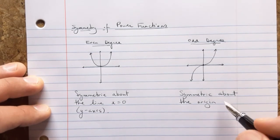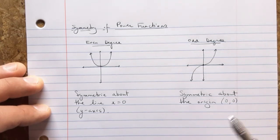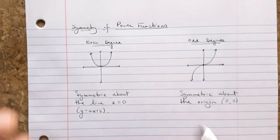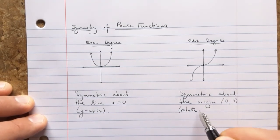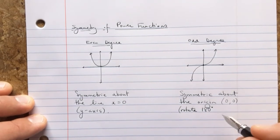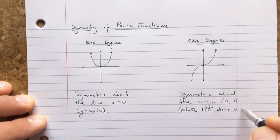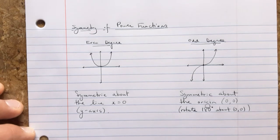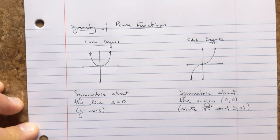So we say here that these odd degree power functions are symmetric about the origin, and that origin, of course, is the point 0, 0. And you can think of this as a rotational symmetry. So you can rotate 180 degrees about the point 0, 0. And when we say about, we're sort of like stuck to that point. So that is the symmetry for all even degree power functions and all odd degree power functions. No exceptions.